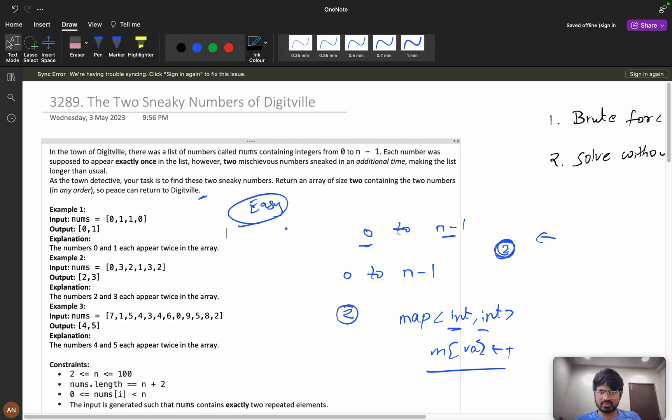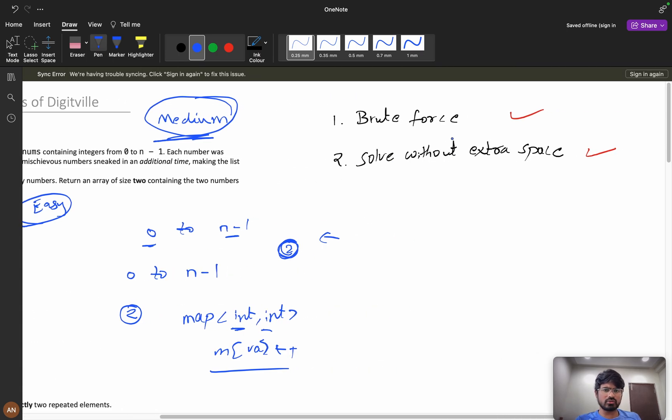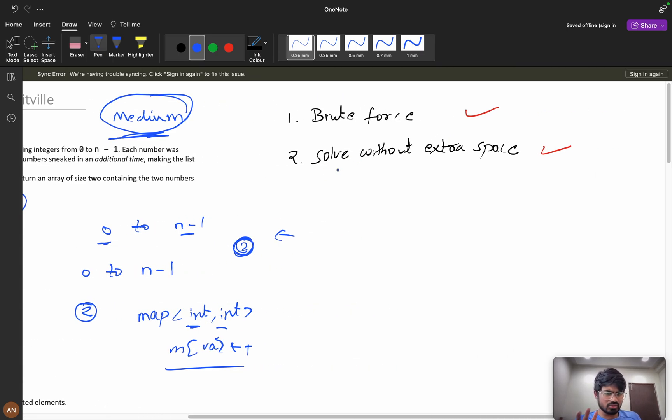Now, this problem is an easy problem if you can use extra space. But now if interviewer asks a follow-up question: can you solve this problem without using extra space? Now this problem is categorized as medium problem. Try to solve this problem for at least 20 minutes before watching the next part of the video. Hint: you can solve this using bit operations.